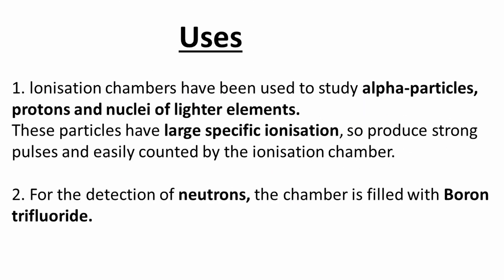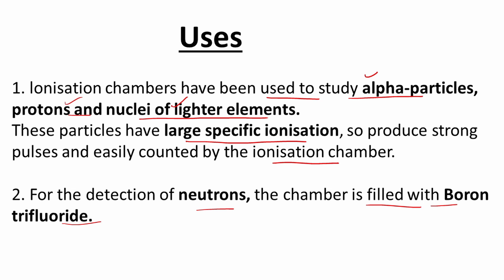The uses of the ionization chamber include detecting alpha particles, protons, and nuclei of lighter elements — particles with large specific ionization. For neutron detection, the chamber must be filled with boron trifluoride (BF₃). So both neutrons and particles with large specific ionization can be detected with an ionization chamber.